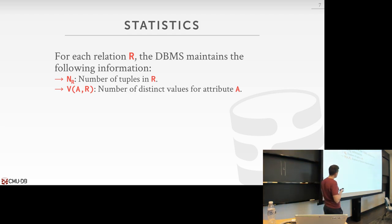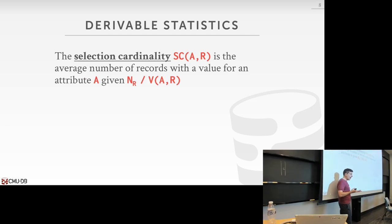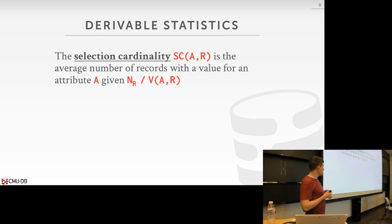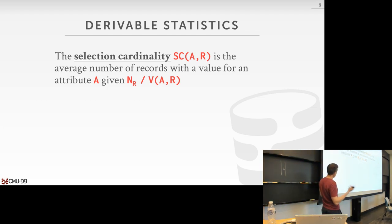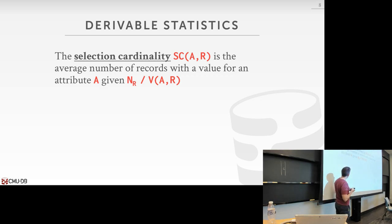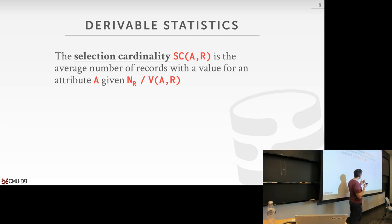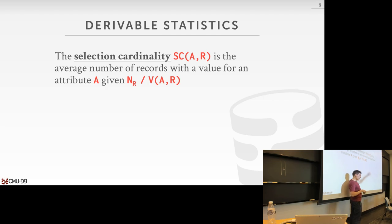With this basic information, we can derive a new statistic called the selection cardinality, defined by the function SC. This computes the average number of records we're going to have for a given attribute with the same value. For every single distinct value, here's the number of times it occurs. We take the number of tuples and divide by the number of unique attribute values, and that tells us for every single attribute how many times it occurs.